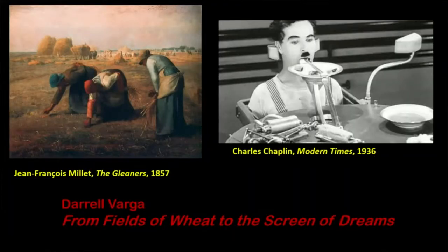This image here is the eating machine. The Tramp character is at lunchtime at the factory, strapped into a machine that is sold to the factory owner as innovation and progress. The workers won't have to stop — the machine will feed the body and the hands can keep working. It turns into a complete disaster, including a mechanized pie in the face. So it's a kind of ode to early cinema, with Chaplin as the last great holdout of the silent era.